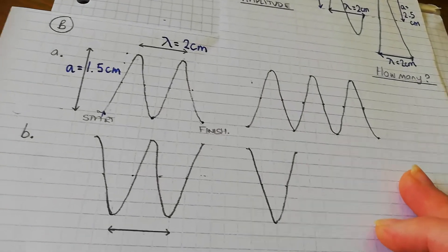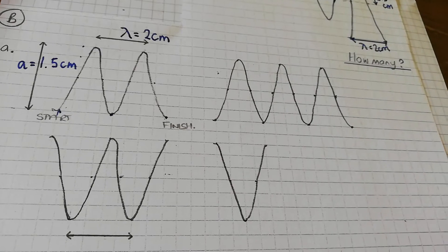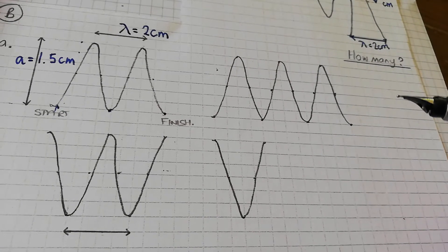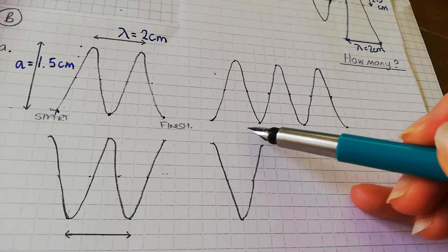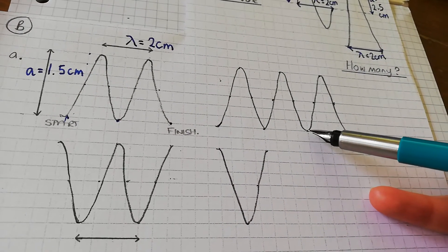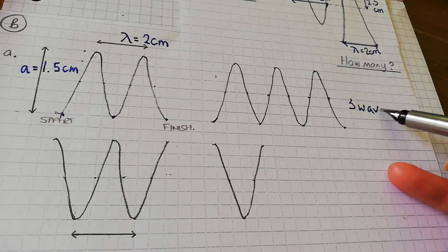So I want you to tell me how many waves I've drawn here. Pause the video if you want time to think. Okay, so we start here - zero waves have happened, one, two, three. So that is three waves.